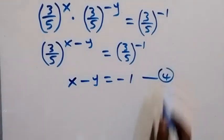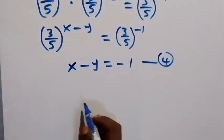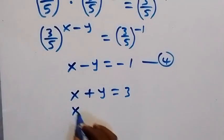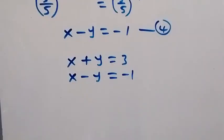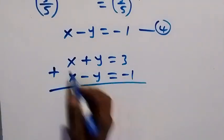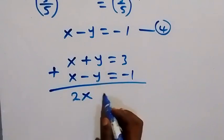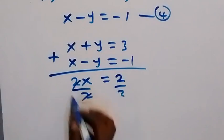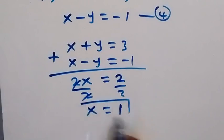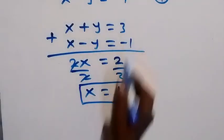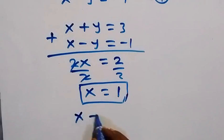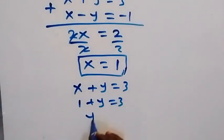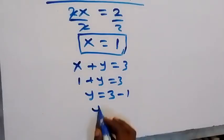The bases are equal so we equate the powers: x minus y equals negative 1. Let's label this as equation 4. Now bringing equation 3 and equation 4 together — equation 3: x plus y equals 3, and equation 4: x minus y equals negative 1. To solve this simultaneous equation, we eliminate y by adding the two equations: 2x equals 2, so x equals 1. To get y, substituting into equation 3: 1 plus y equals 3, so y equals 2.